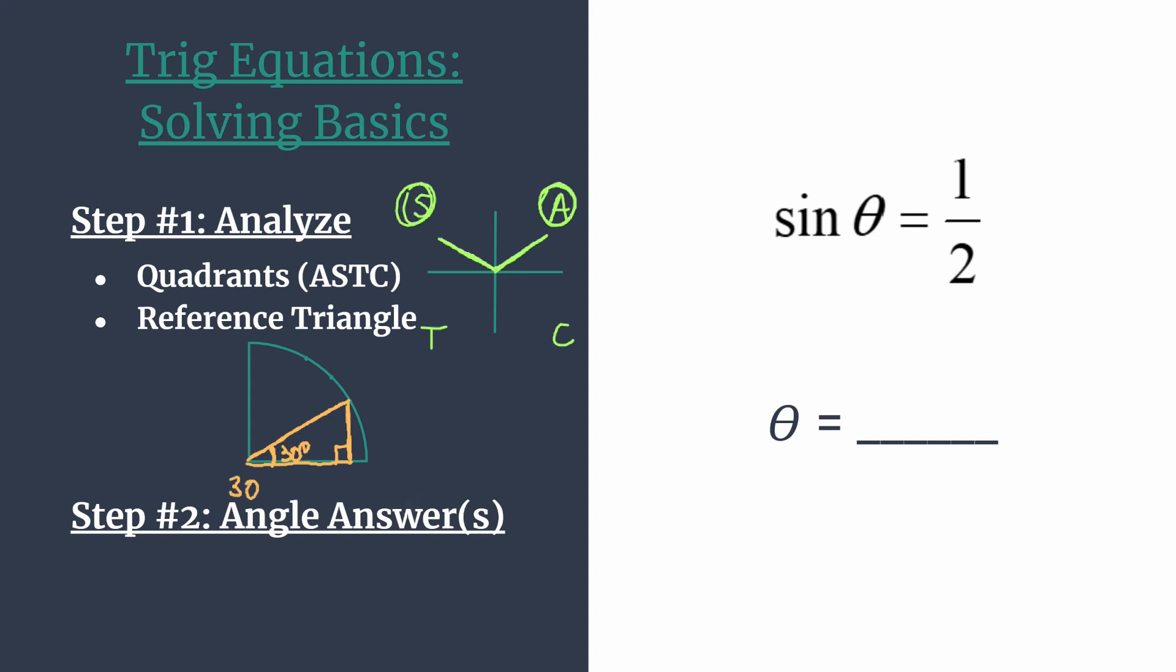That's going to be our reference angle, and that's going to help us determine what our actual angle answers are for this problem. And usually when you're solving a trig equation, you aren't going to notate in degrees, you'll be in radians. So we just need to flip 30 degrees to radians, so that's pi over 6 radians.